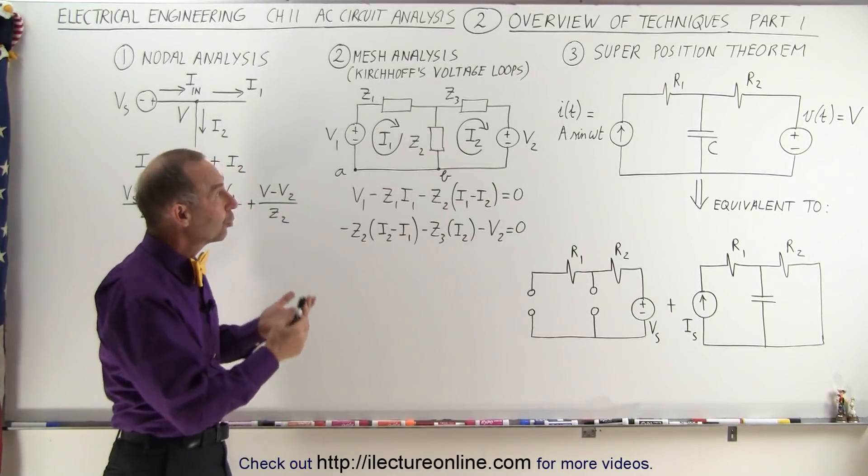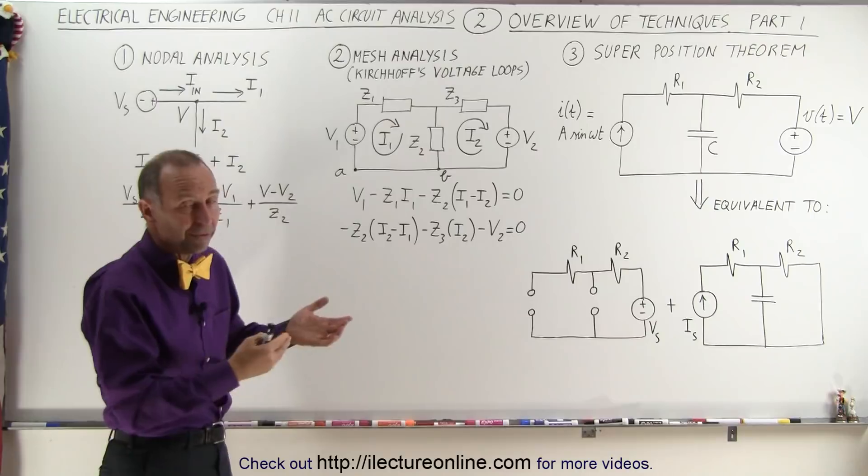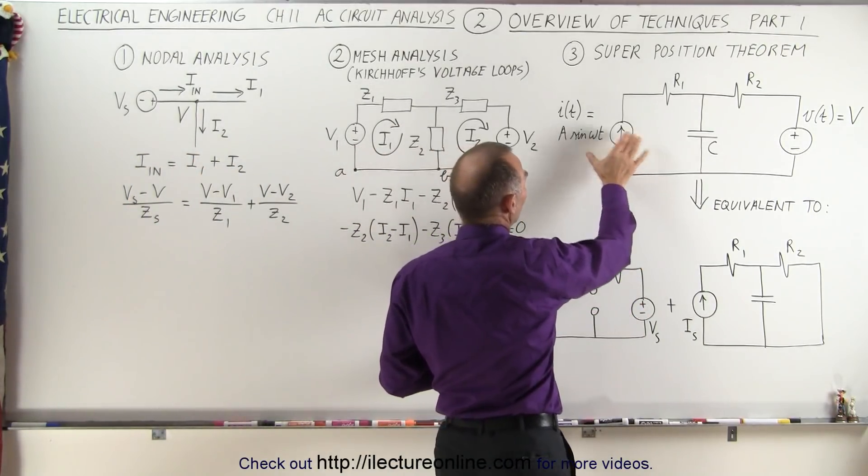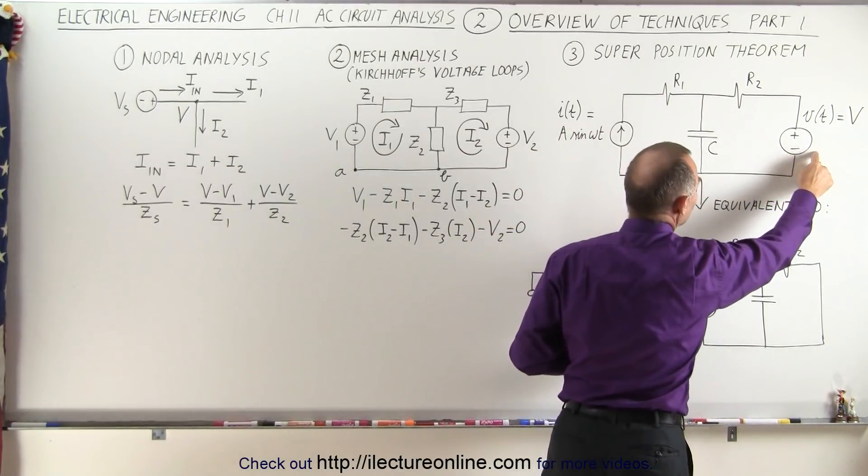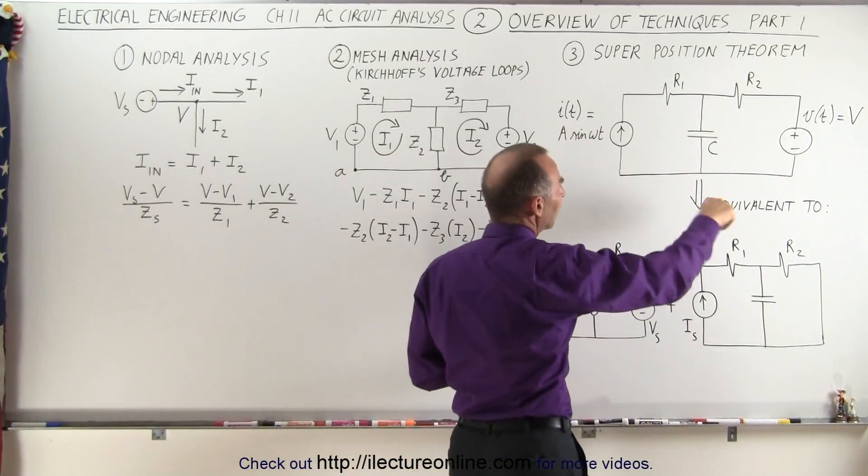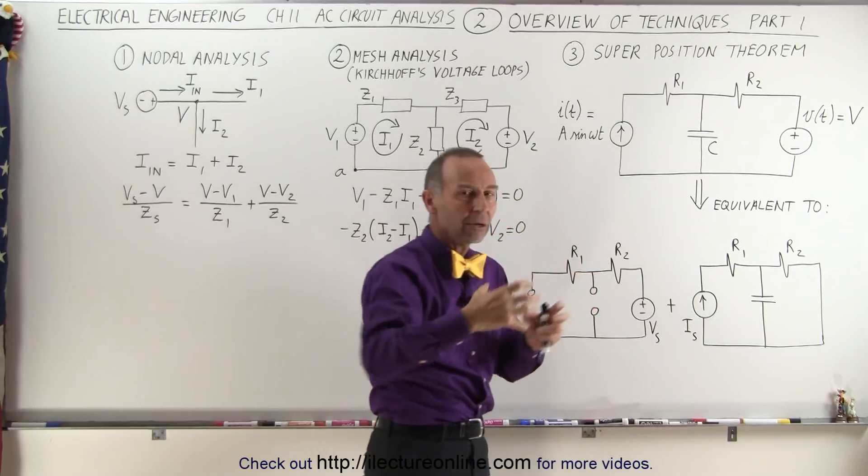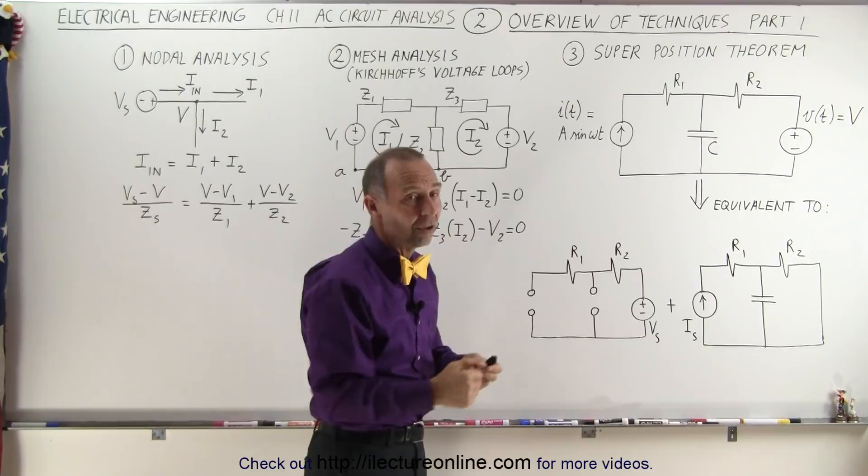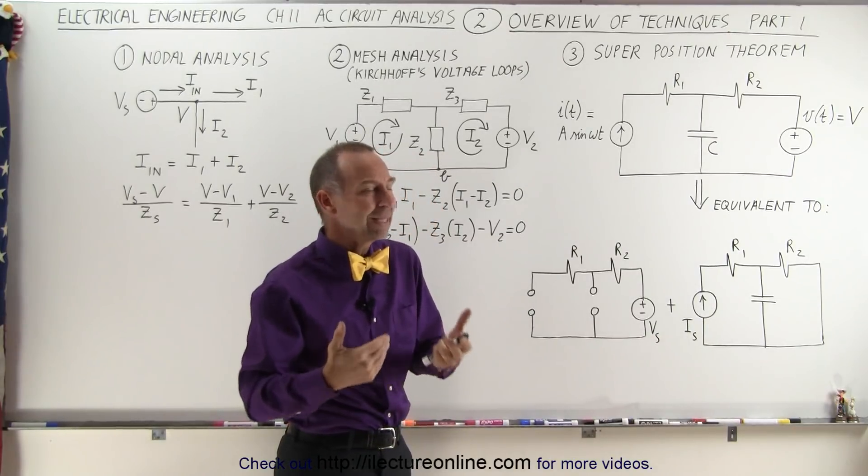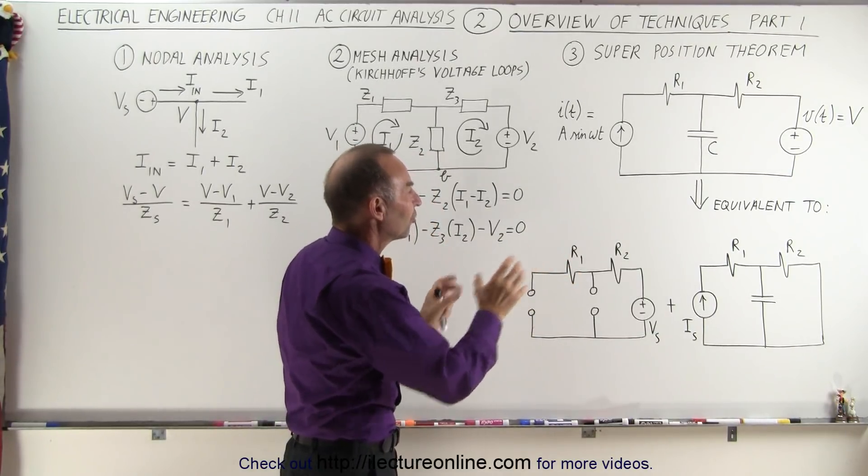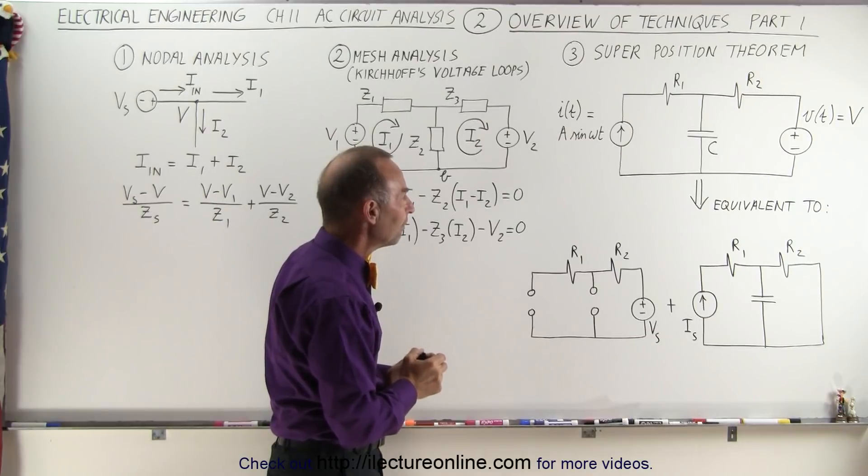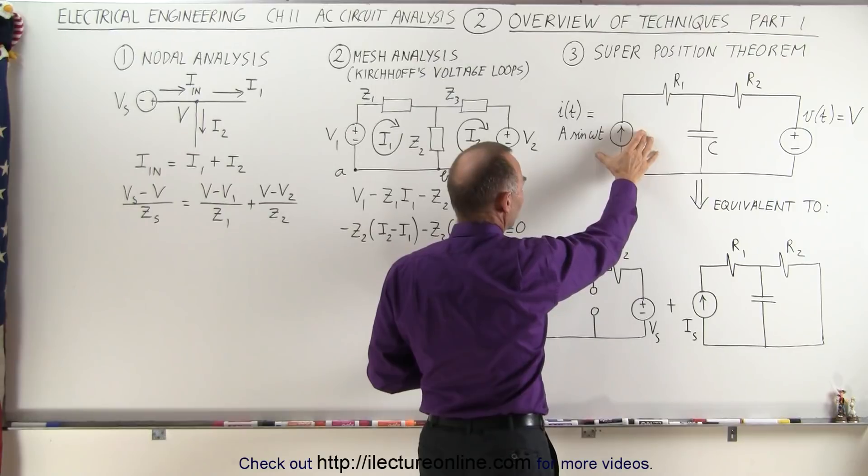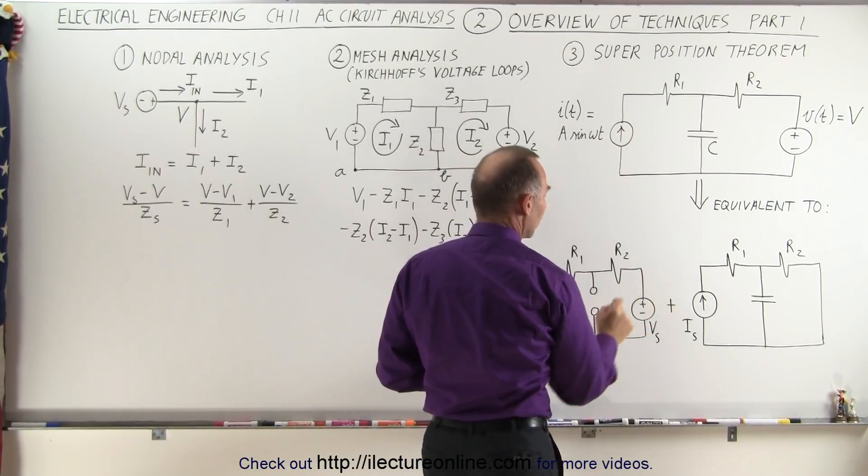The third method is called the Superposition Theorem. We have a very simplistic example here. Notice we have a sinusoidally varying current and a steady DC voltage. We take a circuit like this and break it apart into a multitude of circuits. In this case, we only need two because we only have two sources, so the number of sources you have typically dictates the number of sub-circuits you're going to end up with. The first thing we do is get rid of the current source and only keep the voltage source.